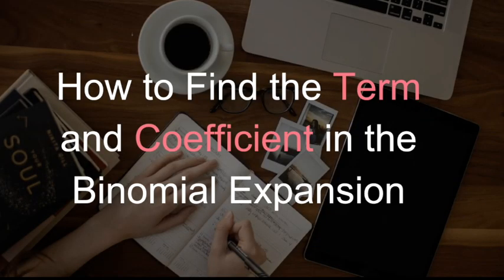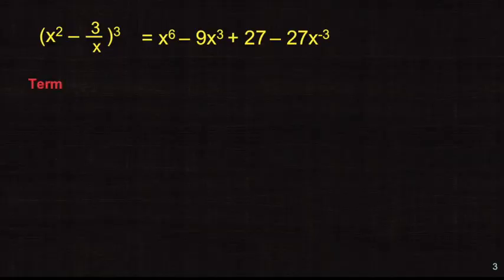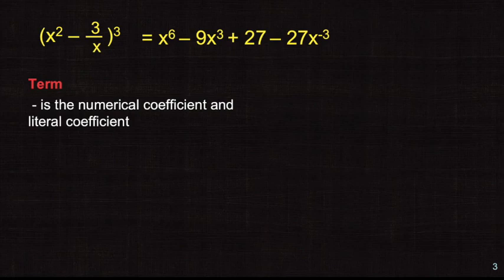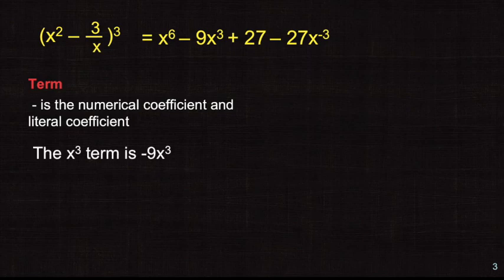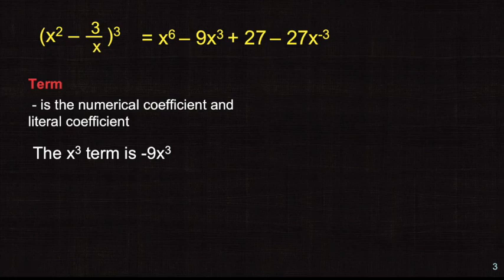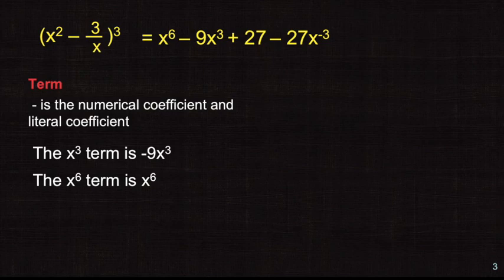Let us differentiate the term and coefficient. What is a term and what is a coefficient? A term is the numerical coefficient and literal coefficient combined. The literal coefficient includes the variable and the index, while the numerical coefficient is just the number. For example, the x cubed term is negative 9x cubed. The x to the power of 6 term is x to the power of 6, in which the numerical coefficient is 1.